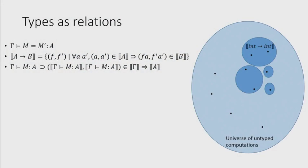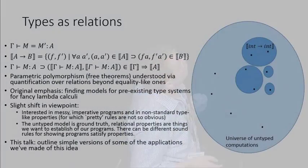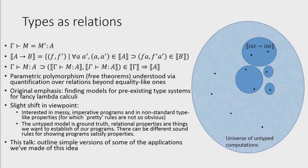So lots of people have studied this kind of thing in the context of polymorphic lambda calculi, so the understanding of parametric polymorphism, the free theorems, is understood by quantification over relations which go beyond these equality-like ones. But the emphasis in a lot of the early work was on finding good models for pre-existing pretty lambda calculi. We have a slightly different viewpoint, which is we're interested in using this technique to reason about messy, dirty, imperative programs and about properties which are perhaps non-standard types, so they might not have such pretty rules. So we're going to take the truth about imperative programs first, and then we're going to try and impose some discipline on it via this methodology of using logical relations.